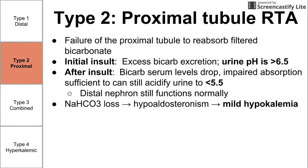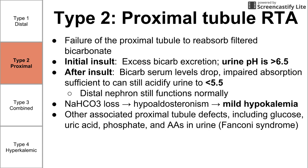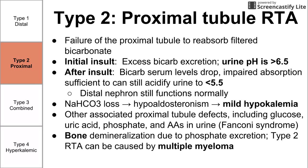Sodium bicarbonate loss can lead to hypoaldosteronism in type 2 RTA, which can produce a mild hypokalemia, so both types 1 and 2 show hypokalemia. Other associated defects in type 2 RTA include the finding of uric acid, glucose, phosphate, and amino acids all in the urine — this is referred to as Fanconi syndrome. Another important association with type 2 RTA is the demineralization of bone, due to phosphate excretion. Type 2 RTA is also related to multiple myeloma.